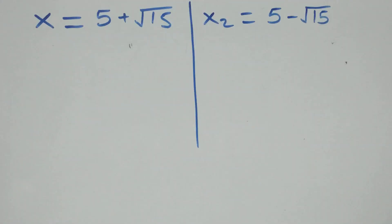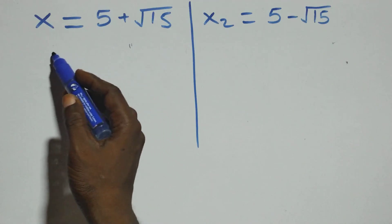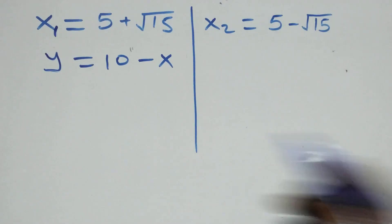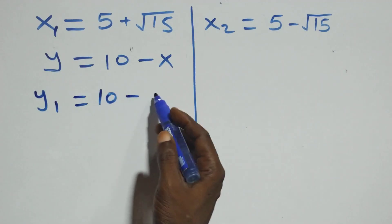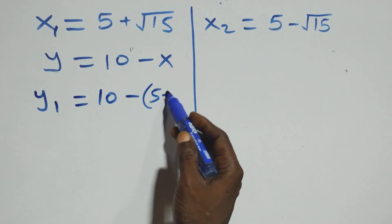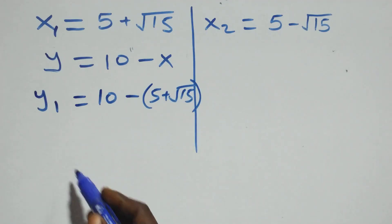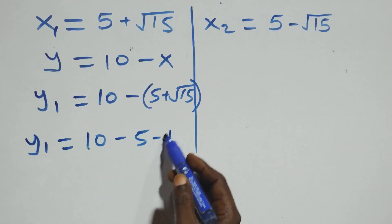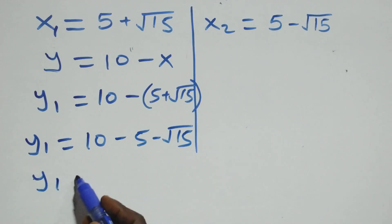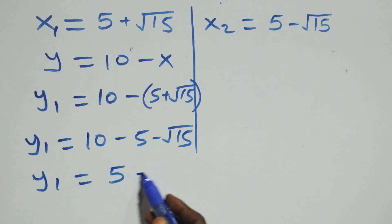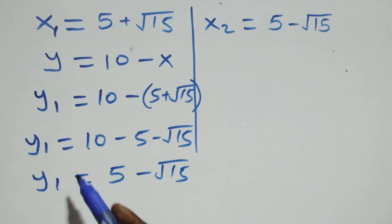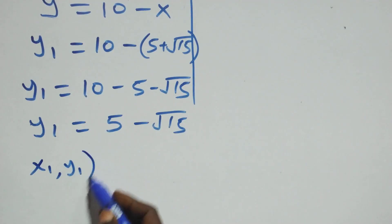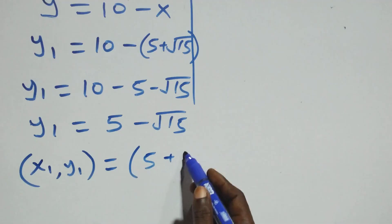Now we find the corresponding values of y using equation three, y equals 10 minus x. For y1, we substitute x1 equals 5 plus root 15: y1 equals 10 minus (5 plus root 15), which gives y1 equals 5 minus root 15. So the first solution pair (x1, y1) is (5 plus root 15, 5 minus root 15).